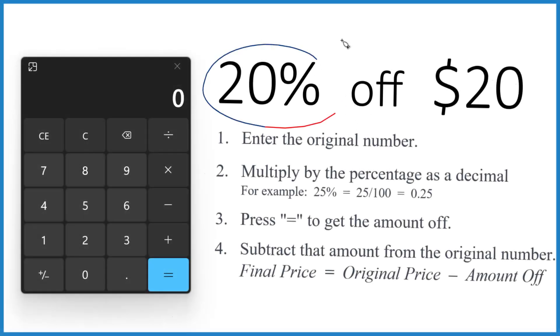So if you need to take 20% off of $20, say you're buying something for $20 but you get 20% off, how much do you get off and then how much do you pay? So here's how you can do it.